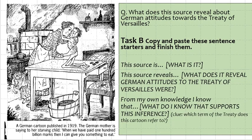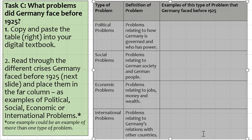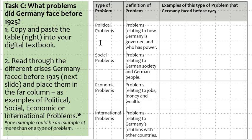Task C: copy and paste the table. Having copied and pasted the table, you need to read through it — this table explains the different crises that Germany was facing after World War One. Read through these and decide: are they social, are they political, are they economic, or are they international problems that Germany faced?